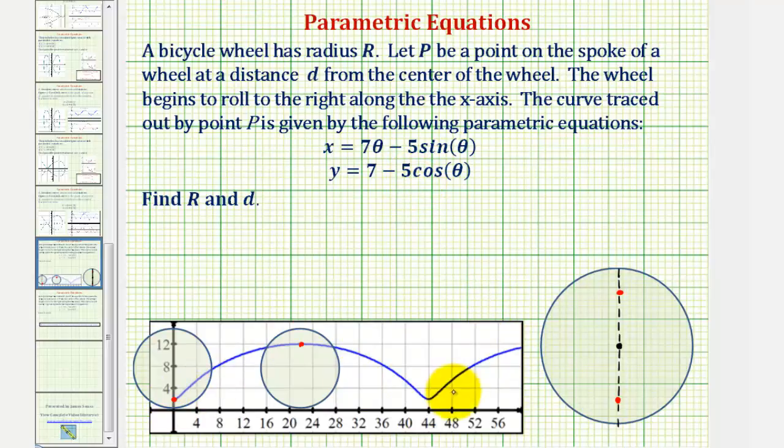So notice how, looking at our curve, if we find the minimum y value, this would give us this distance here from the point to the edge of the circle, and if we find the maximum y value, it would give us this distance here, which will be enough information to allow us to find big r and d.